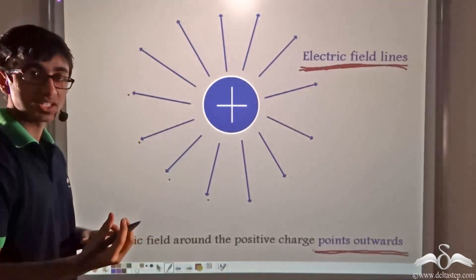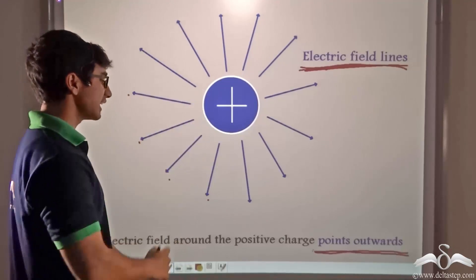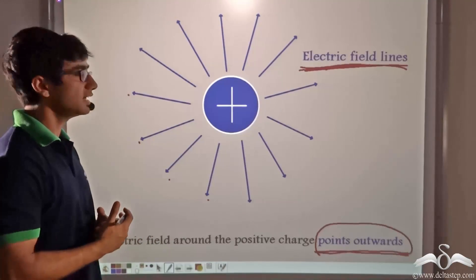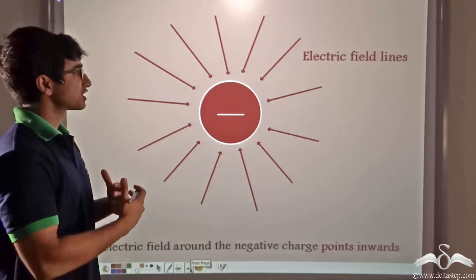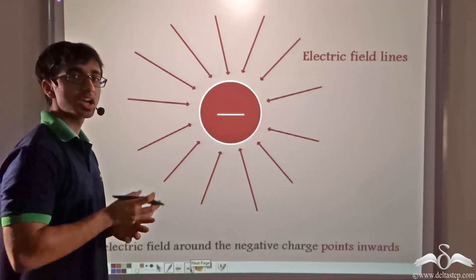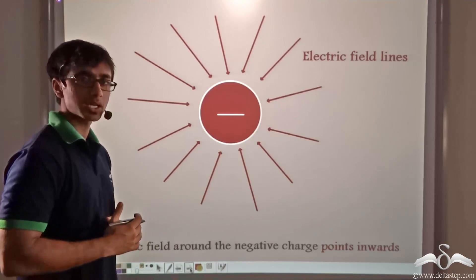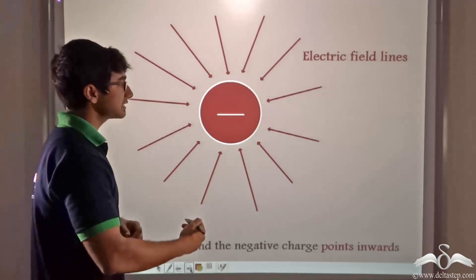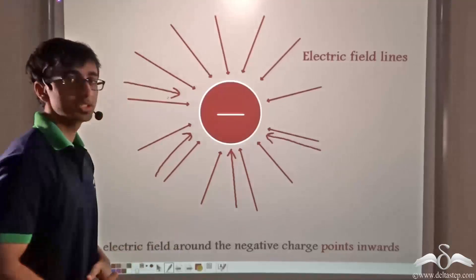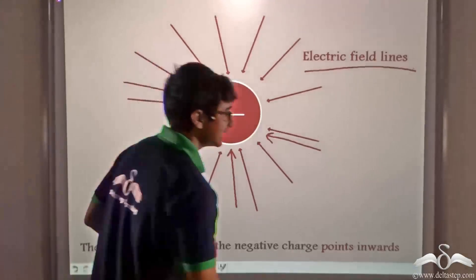When a positive charge is brought near another positive charge, it is repelled, so the field lines point outwards. Field lines are simply a method to depict the electric field around a charge. Similarly, for a negative charge: if a negative charge is brought near a positive charge, since they are unlike charges, they attract one another. Because they attract, the field lines point inwards to the negative charge — the electric field lines for a negative charge point inwards.